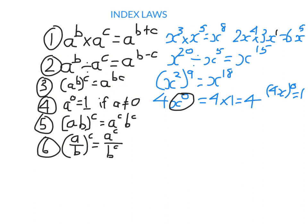Index law 5: a product raised to a power means raising each factor to that power: (a × b)^c = a^c × b^c. Note the difference from law 3: here b is a base being multiplied, not a power. For example, (3x)⁴: people remember to raise x to the 4th, but they often forget to also raise 3 to the 4th. 3⁴ = 81, so (3x)⁴ = 81x⁴.